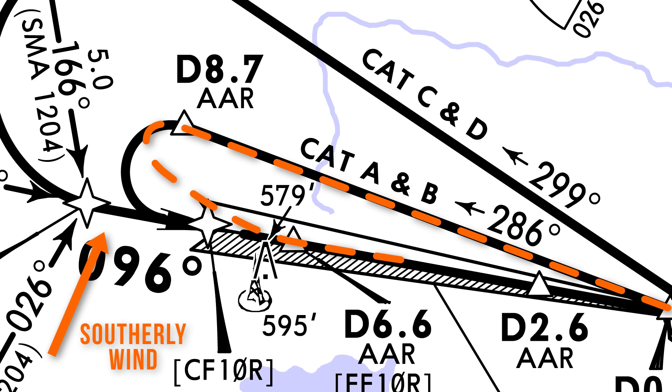Once you've intercepted the final approach, you'll keep tracking the localiser, waiting for the glideslope to move towards centred, then start your descent along the ILS.